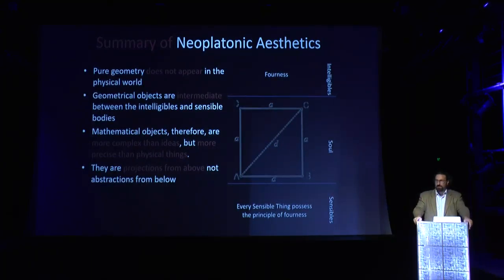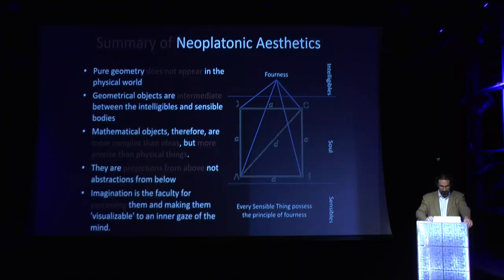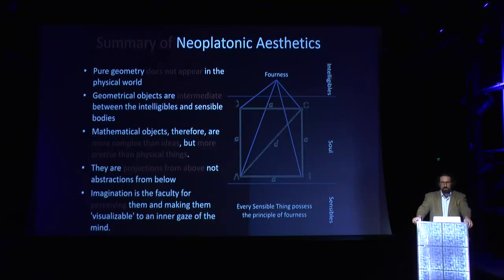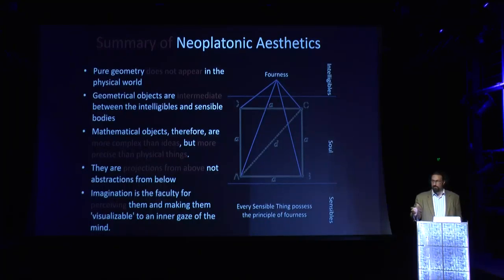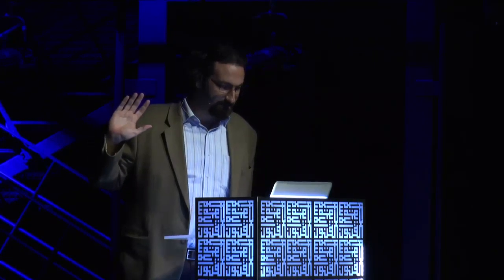The imagination is the faculty for perceiving geometry and number and making them visualizable to an inner gaze of the mind. When we visualize geometry in our minds, it is our imagination that provides a certain form for what is otherwise formless. For Pythagoreans and Neoplatonists, 'oneness' is a principle associated with the supreme deity, 'two' is the principle of duality, 'three' is the first principle of creation, and 'four' is associated with nature or the natural world.